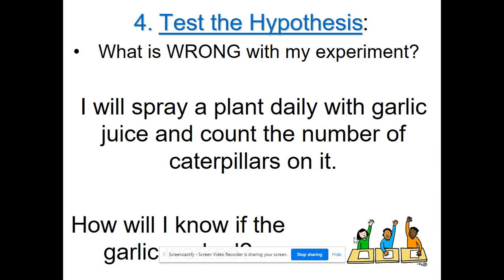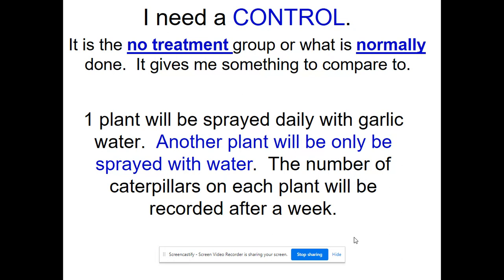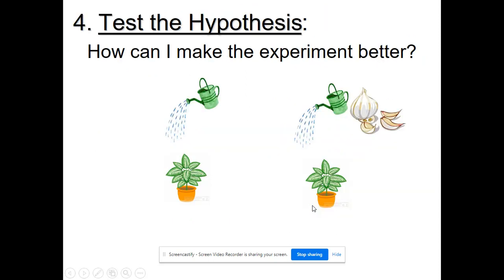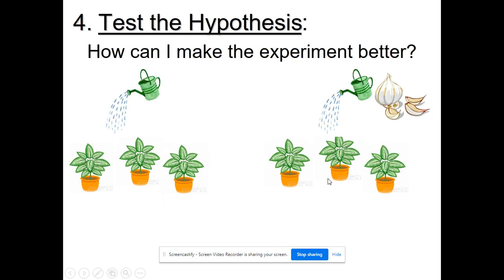If I just spray one plant with garlic juice and count caterpillars, I don't have anything to compare it to. I need a control — either the no-treatment group or the normal situation. Since I don't normally spray plants with garlic juice, my control is a plant I do not spray with garlic juice. I'll compare that control plant to the experimental plant sprayed with garlic juice.